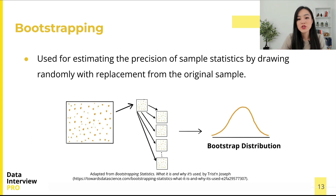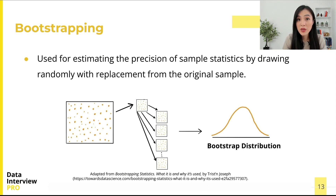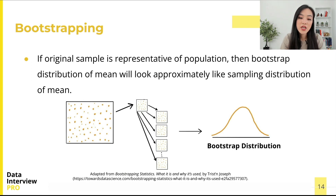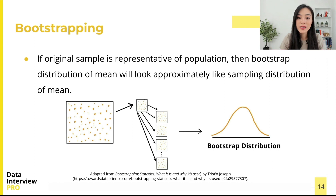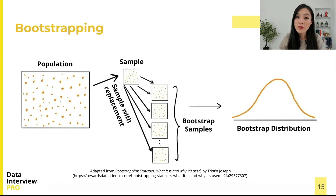The bootstrap method uses the given sample to create a new distribution called the bootstrap distribution, which approximates the sampling distribution for the sample mean or other statistics. The idea is that if the original sample is representative of the population, then the bootstrap distribution of the mean will look approximately like the sampling distribution of the mean — having roughly the same spread and shape.